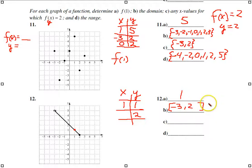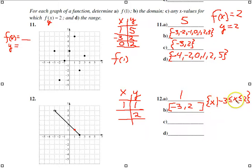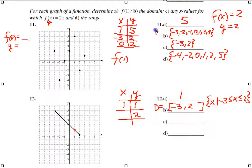In set builder notation, we'd say X is such that -3 ≤ X ≤ 2. We had interval notation in the previous section. This is interval notation and this is set builder notation, and that covers number 12's domain. D equals [-3, 2] and R equals the range interval.